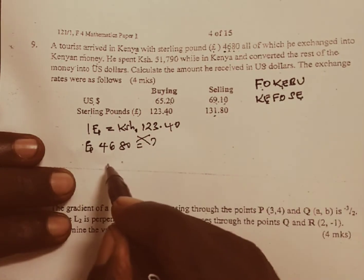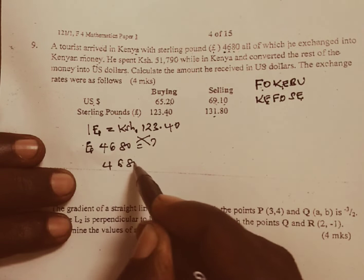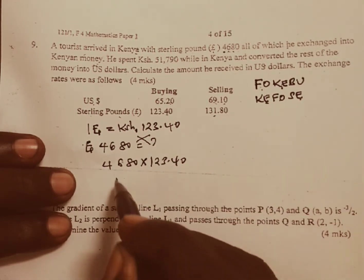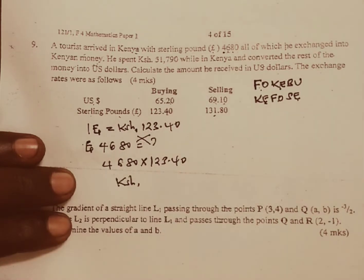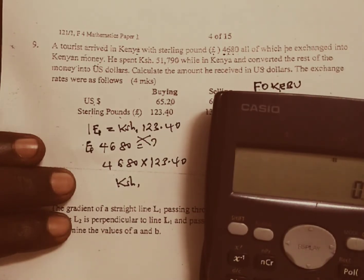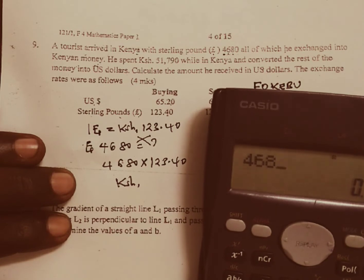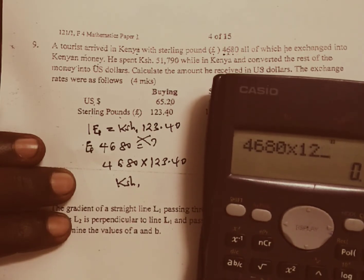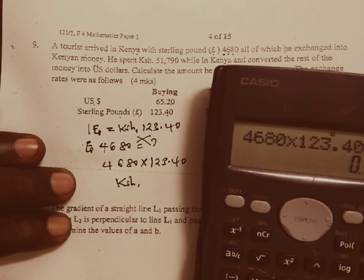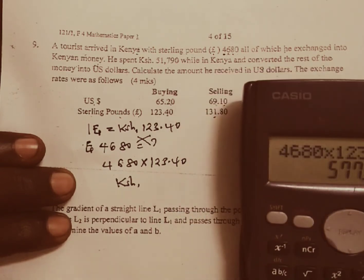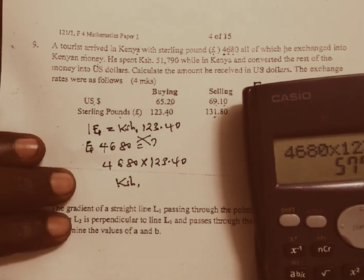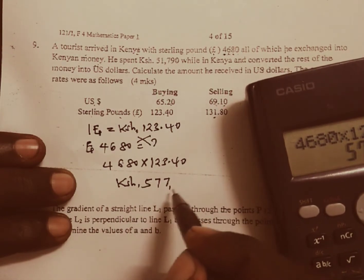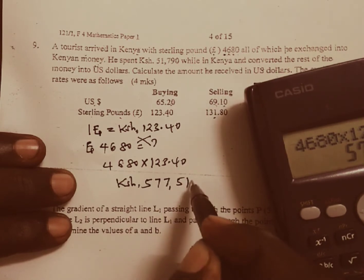Sterling pounds £4,680 will be equal to what? If we cross multiply we are going to have 4,680 times 123.40 cents and this one would be equal to how much in Kenya shillings? We take 4,680, we multiply by 123.40 cents and this one is going to give us 577,512 shillings.